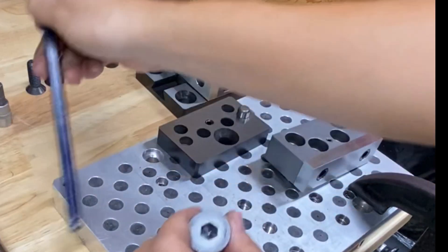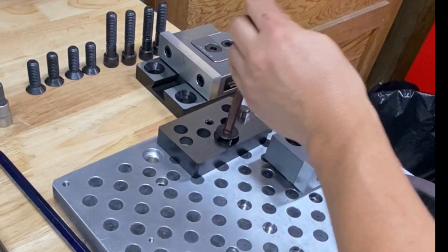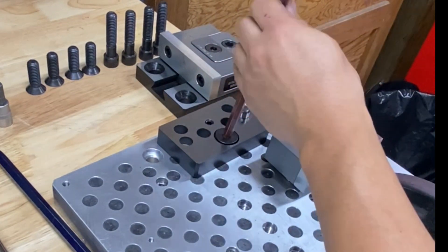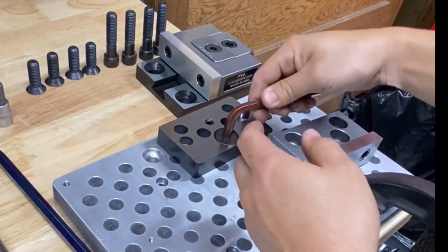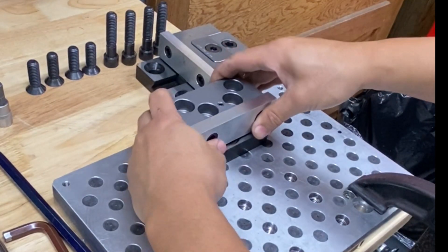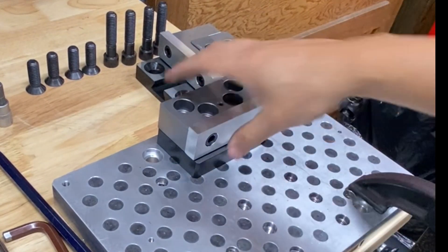Then you're going to put this flat head screw in. This has a little bit of an unorthodox design because you can see it's kind of non-accessible once you put the top jaw on.